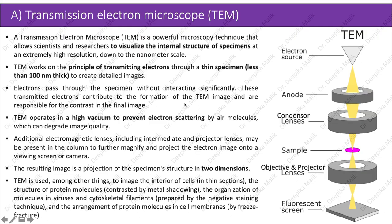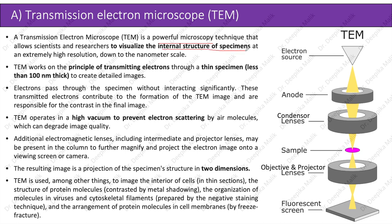Transmission electron microscope (TEM): a TEM is a powerful microscopy technique that allows scientists and researchers to visualize the internal structure of a specimen at an extremely high resolution, down to the nanometer scale. TEM works on the principle of transmitting electrons through a thin specimen less than 100 nanometers thick to create detailed images. Electrons pass through the specimen without interacting significantly, contributing to the formation of the TEM image and providing contrast. TEM operates in a high vacuum to prevent electron scattering by air molecules, which can degrade image quality.